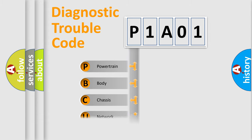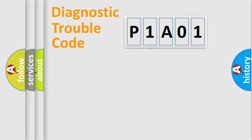Powertrain, Body, Chassis, and Network. This distribution is defined in the first character code.